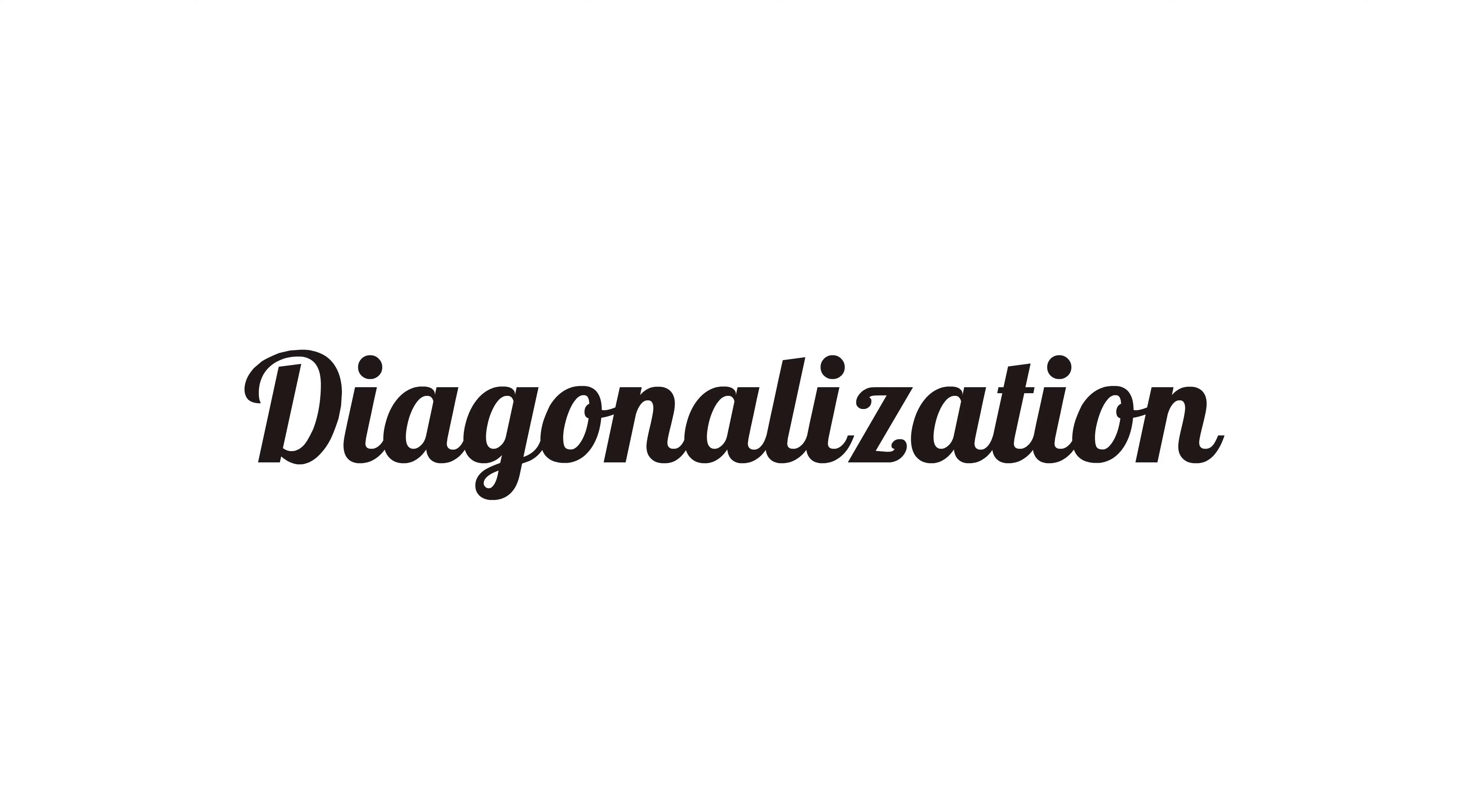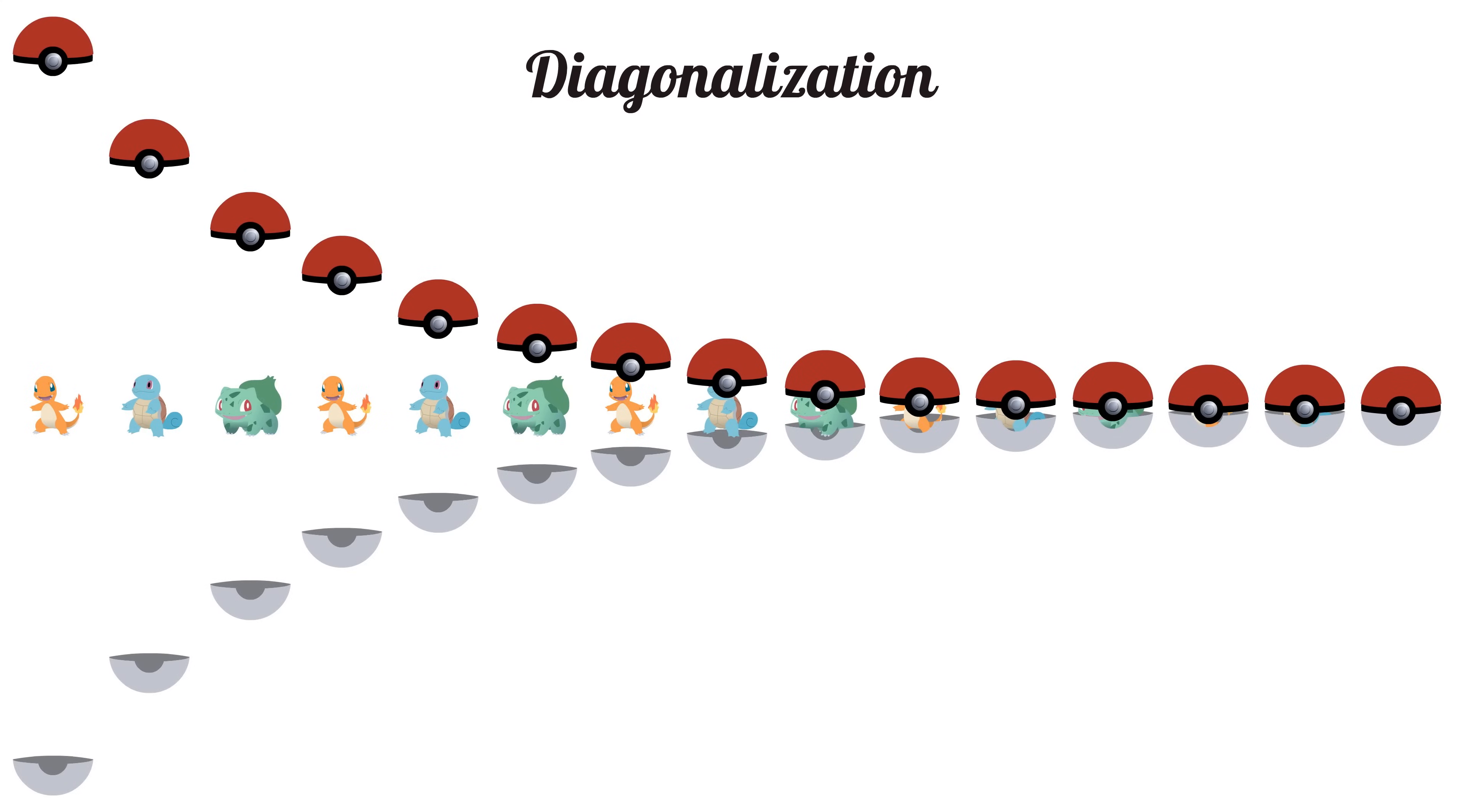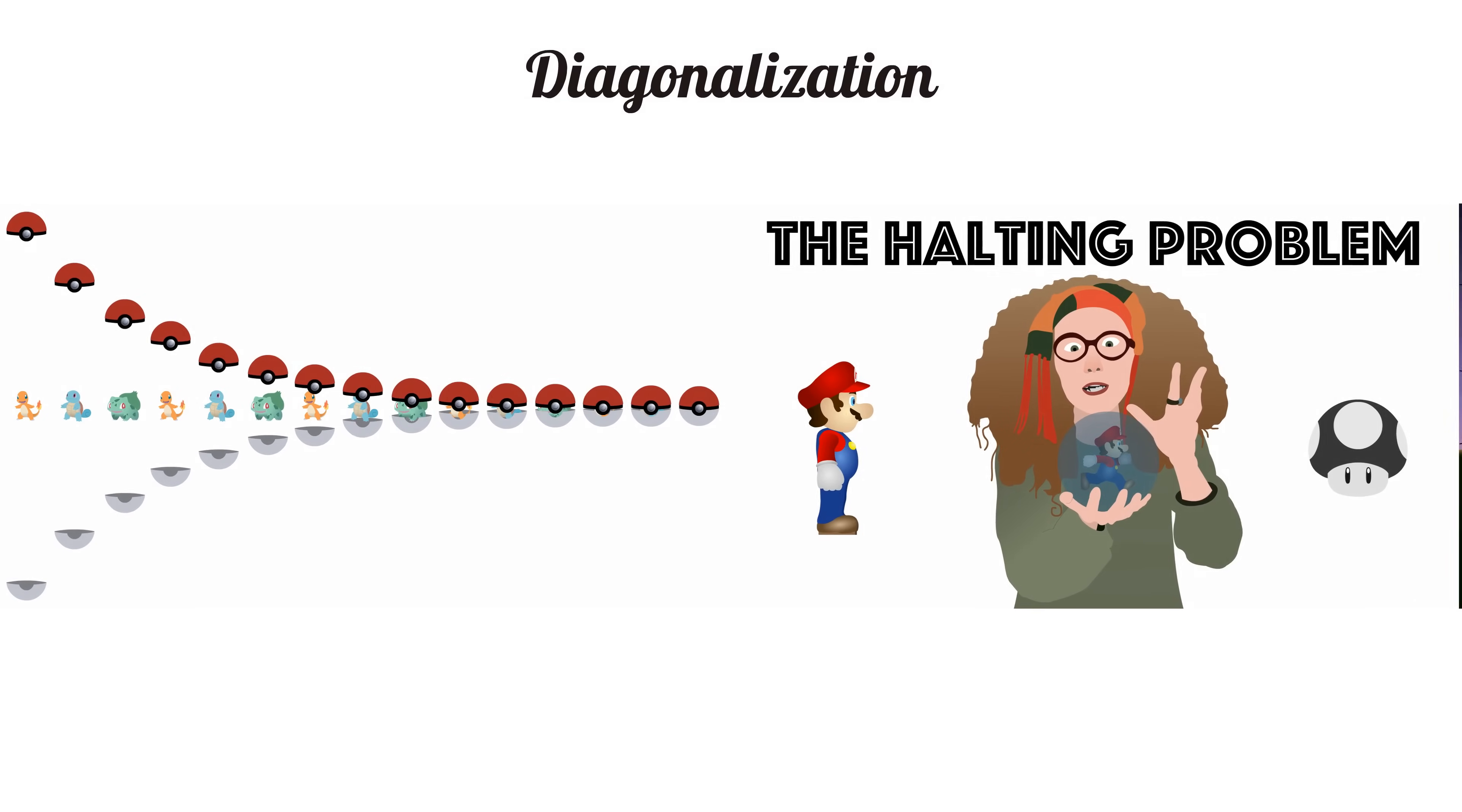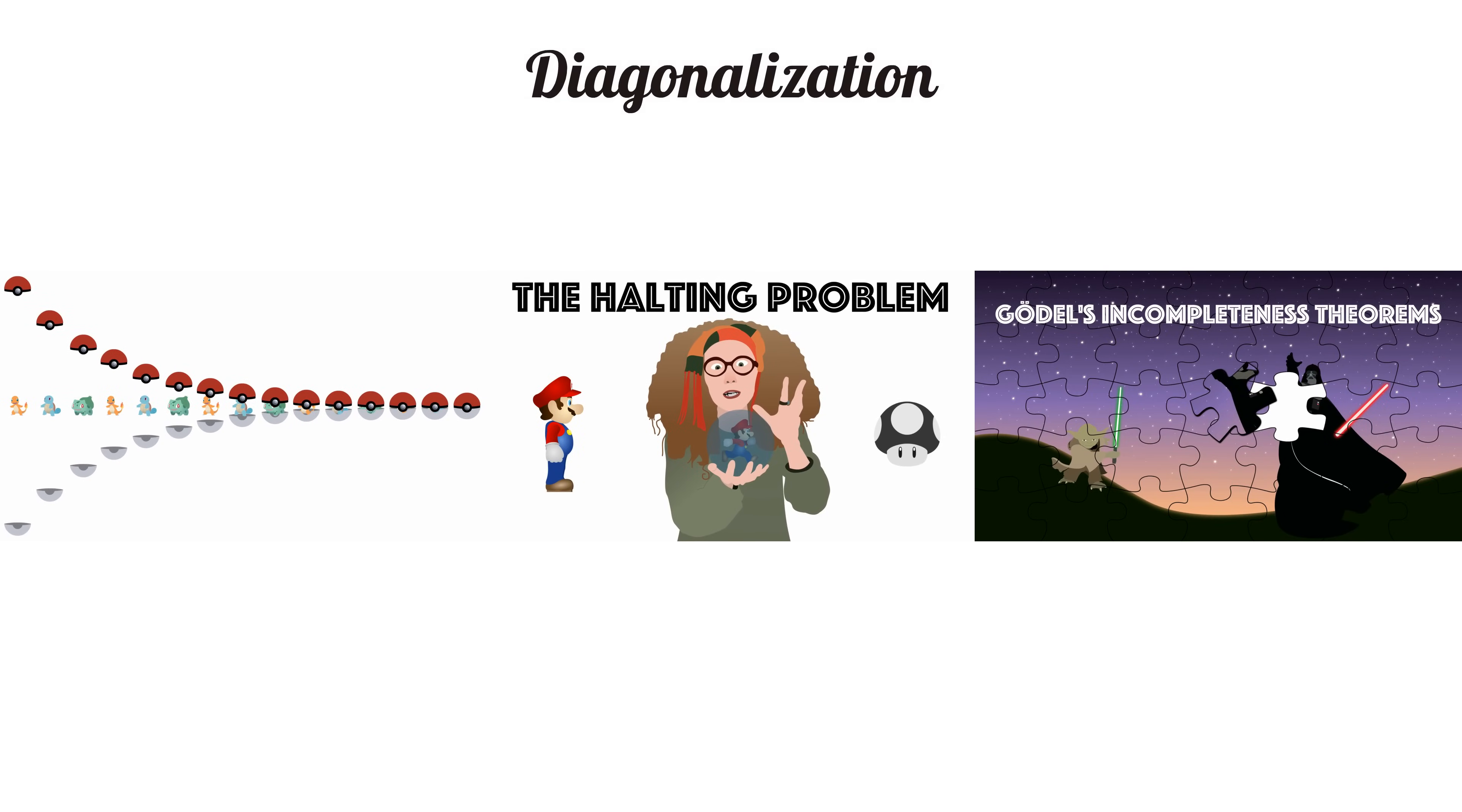We've used diagonalization in the past to show that there are different kinds of infinities, show that the halting problem is unsolvable, and prove Gödel's incompleteness theorems. It is a useful technique to prove that two sets are not the same.